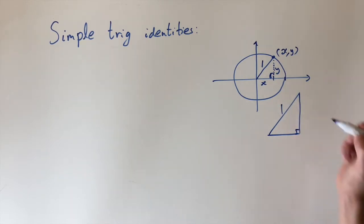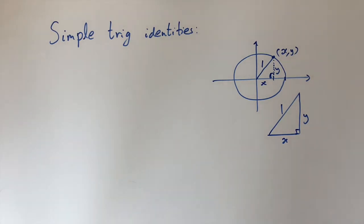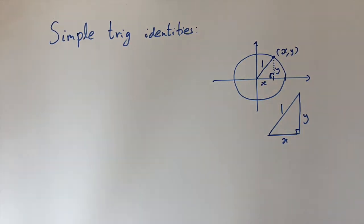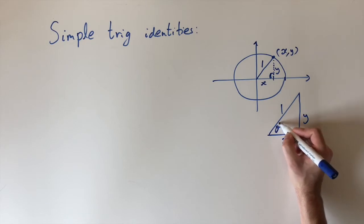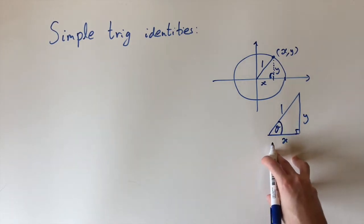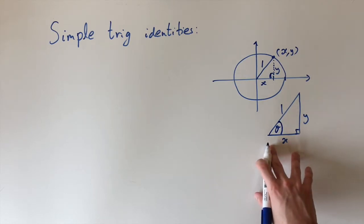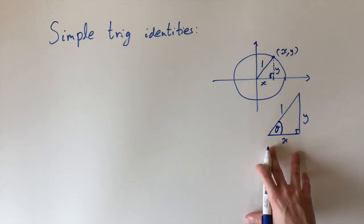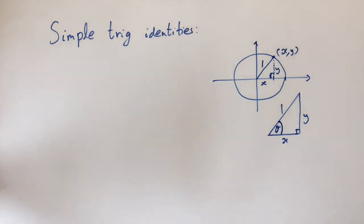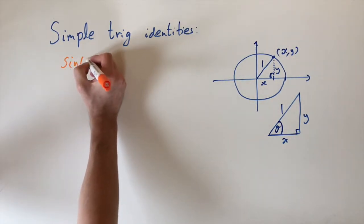Let me sketch out that triangle a bit more clearly: this is a right-angle triangle, the hypotenuse is one, the base is x, and the height is y. To think in terms of trigonometry we need an angle, so I'll call this angle theta, and we'll apply sine, cosine, and tan to it. We can find a formula for sine of theta.